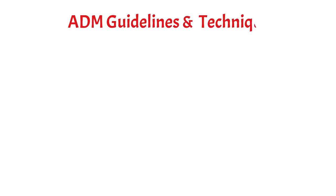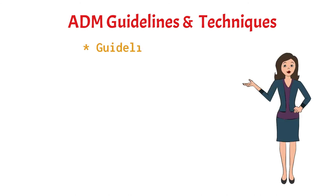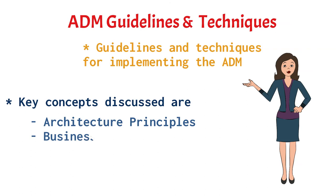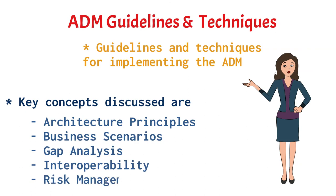Part three of TOGAF is the ADM guidelines and techniques, which essentially provides guidelines and techniques for implementing the architecture development method. Key concepts discussed here are the architecture principles, business scenarios, gap analysis, interoperability, and risk management.